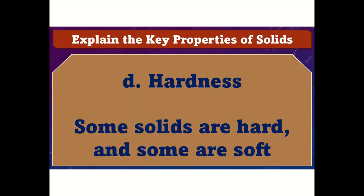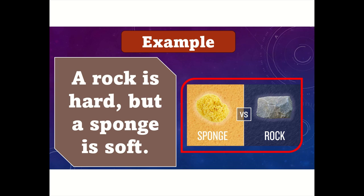D: Hardness. Some solids are hard and some are soft. For example, a rock is hard, but a sponge is soft.